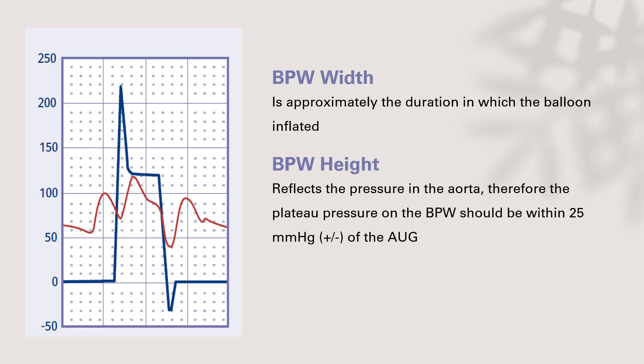Balloon pressure width is the duration in which the balloon is inflated. Balloon pressure waveform height is reflecting the pressure inside the aorta. And therefore, the plateau pressure on the balloon pressure waveform should be within 25 millimeters mercury of the augmented diastolic pressure on arterial pressure waveform. So if it's more than 25, the balloon pressure, that means the balloon is larger or bigger than the aorta. So we can aspirate some of the helium from the balloon to decrease its size. For example, we can reduce 50cc to 30cc by withdrawing some of the helium from the balloon itself.